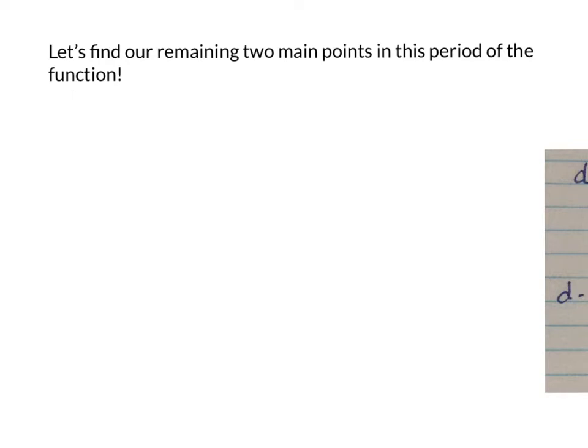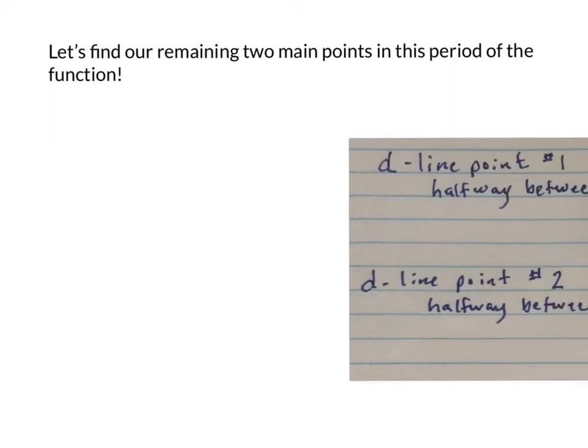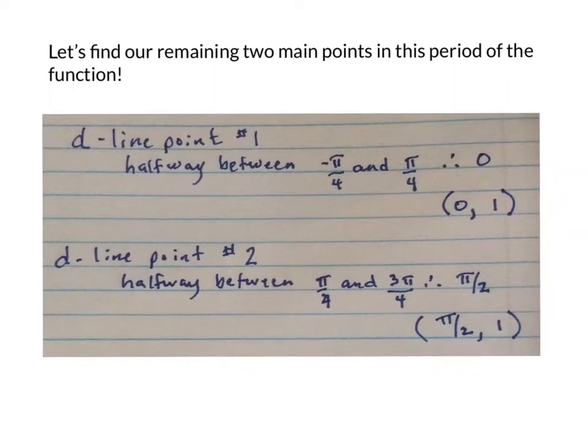Now we're going to find our final two points. Some people are able to look at the graph and understand where these would fall. But basically we're looking for two points on the d-line. Our d-line is at 1. The first point would be that point that falls between negative π over 4 and π over 4. That would be 0. Our second point would be between π over 4 and 3π over 4, which would be π over 2. So these two remaining points we will now look at on our graph.